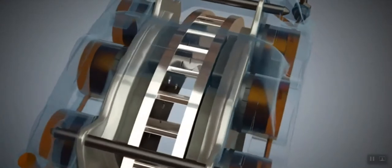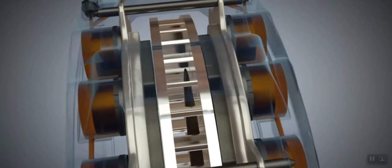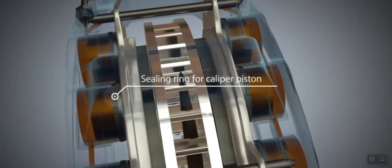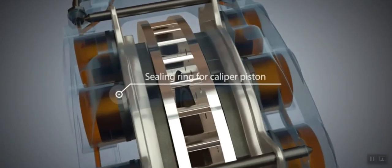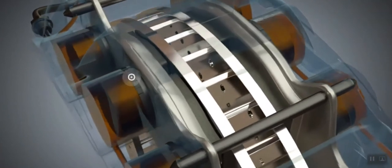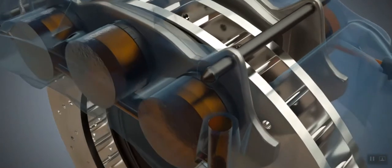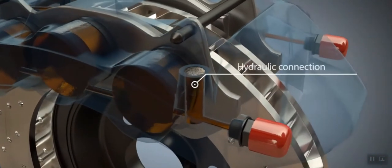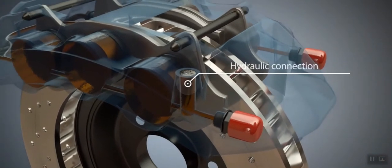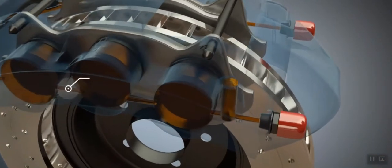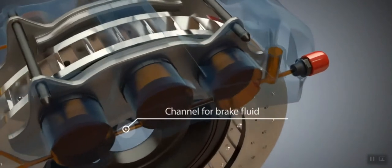Caliper pistons are controlled by brake fluid and sealed with the help of sealing rings. Brake fluid enters the channels of the caliper via a hydraulic connection. The caliper pistons on the opposite side are supplied with brake fluid via one or more channels.